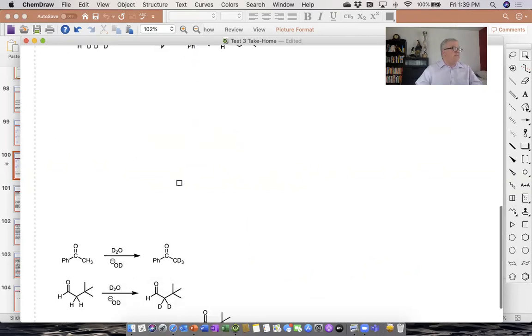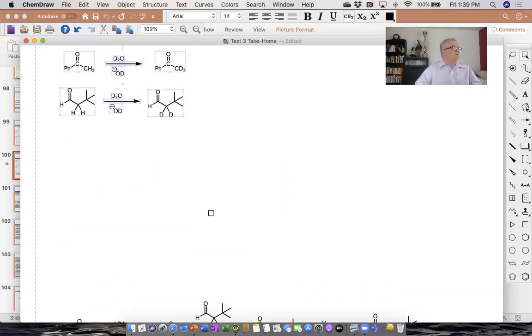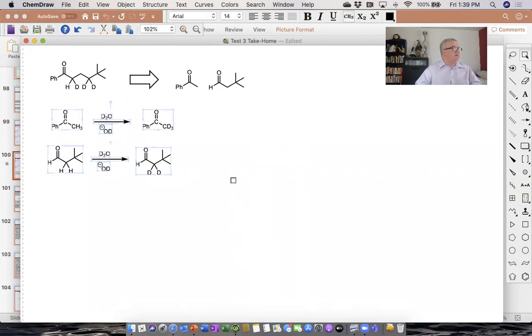We can do that fairly easy by doing these exchange reactions. We take acetophenone and we mix it in with some water, throw in some base. We're going to get an exchange reaction. The base is going to pull off a proton and then it's going to float away. And when that enolate anion finds a molecule of water, it's going to find a molecule deuterated water.